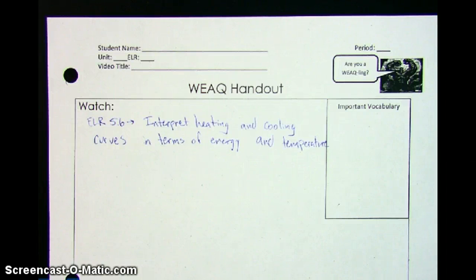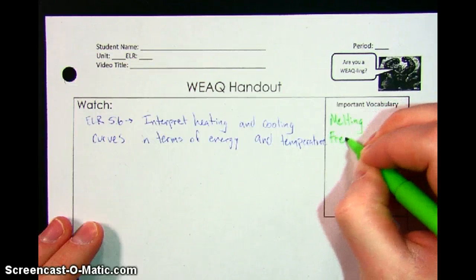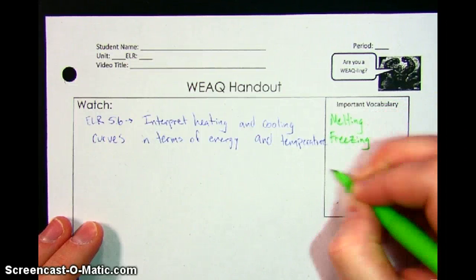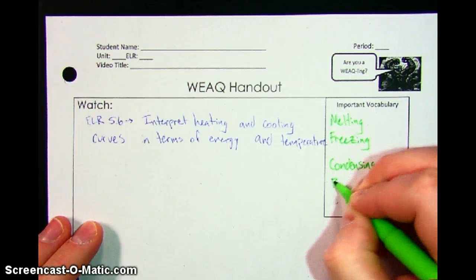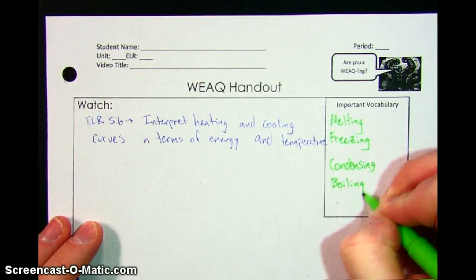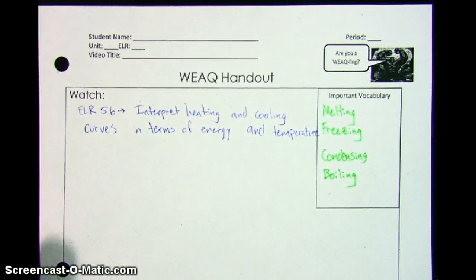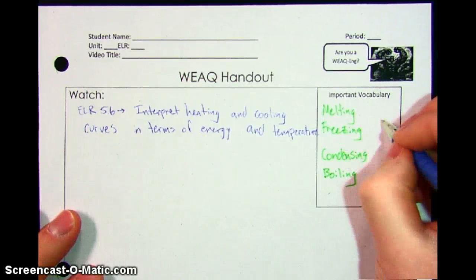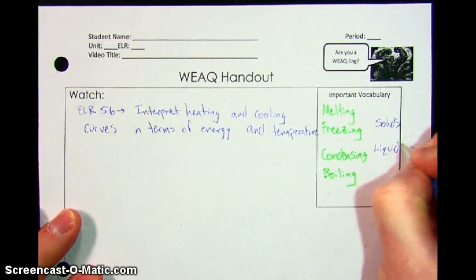The important key vocabulary that you're going to need: there are a few and they're all words that we've heard before. They are melting, freezing, condensing, and boiling. Those are the four phase changes that we've spent the most time on in class. And then those phase changes are talking about moving between solids, liquids, and gases.